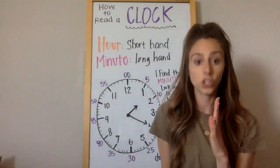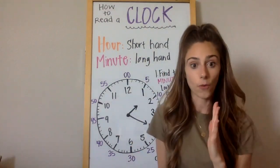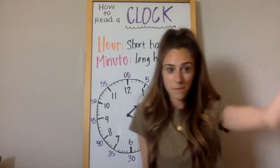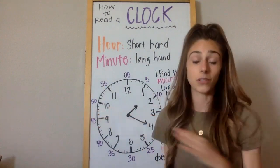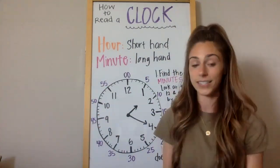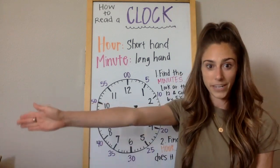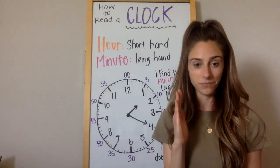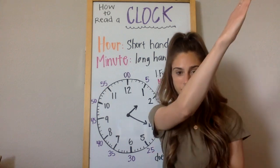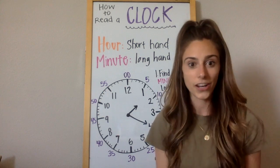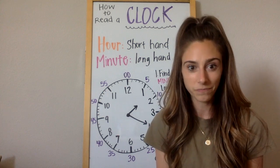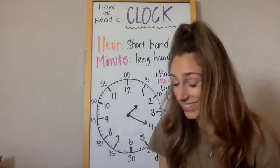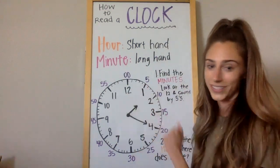So ready? Hour — short. Minute — long. Hour — short. Minute — long. Do it with me. So now when I do the symbol, I want you to say what it is out loud. You can practice that when you're at home after you listen to this.